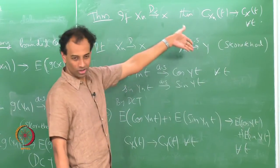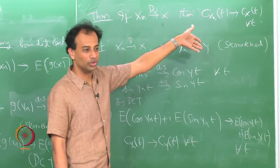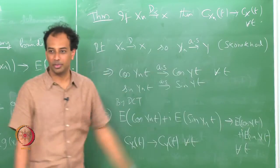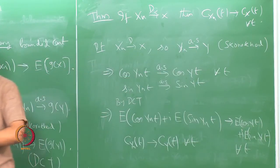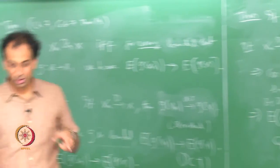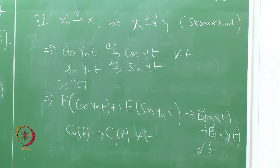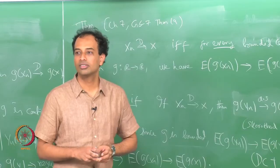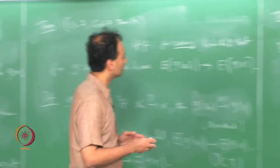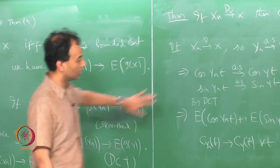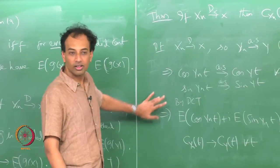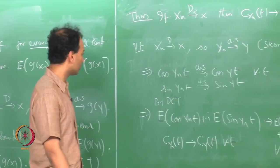Since y_n and x_n have the same distribution, their characteristic functions are equal: φ_{y_n}(t) = φ_{x_n}(t). Therefore φ_{x_n}(t) → φ_x(t) for all t. This is why the Skorokhod theorem is very useful — it allows you to move to a new space, invoke DCT and MCT and so on, and then come back to the original space to conclude the result.